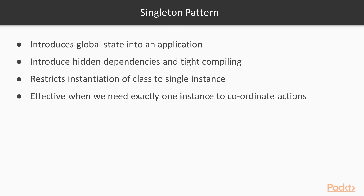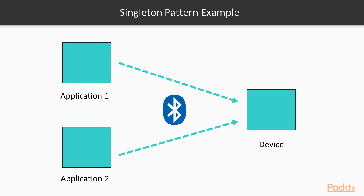Let's start off by looking at one of the most controversial and possibly overused design patterns: the singleton pattern. A singleton pattern introduces a global state into an application, which provides the ability to change the object at any point within the application. The singleton pattern can also introduce hidden dependencies and tight coupling. The singleton pattern restricts the instantiation of a class to a single instance for the lifetime of an application. This pattern is very effective when we need exactly one instance to coordinate actions within our application. An example of a good use of a singleton is if our application communicates with a remote device over Bluetooth and we want to maintain that connection throughout our application.